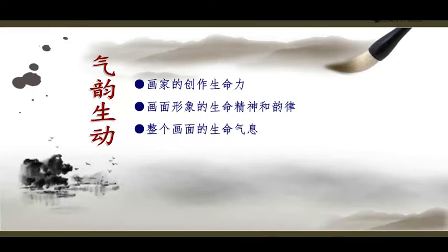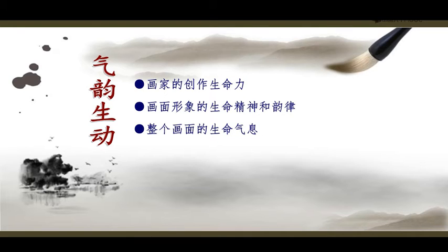今天我们再来看气韵生动,应该怎么认识?我觉得有三层。首先第一层,它是画家创作的生命力。画家创作作品是把自己的情感、智慧、思想复制于画面,它自己本身的生命力状态会在创作作品中有所体现。比如说一个人生病了,笔都拿不起来,称称巍巍的,画出的形象一定是绵软无力的,线条也没有力量。只有画家本身有蓬勃的生命力、艺术的创作力,笔下的画面才具有生命力。